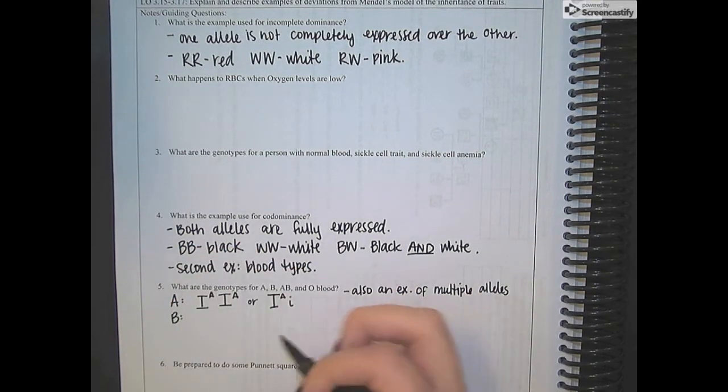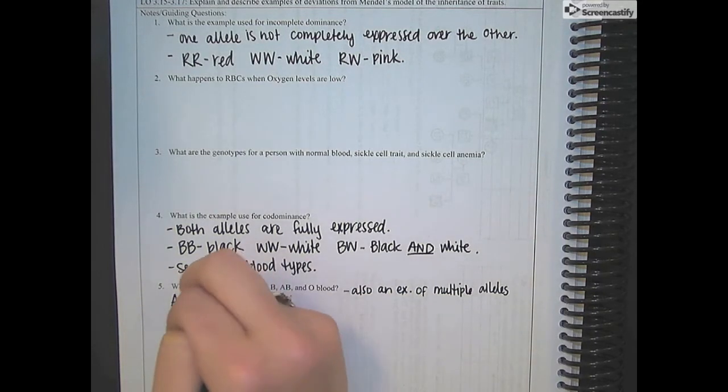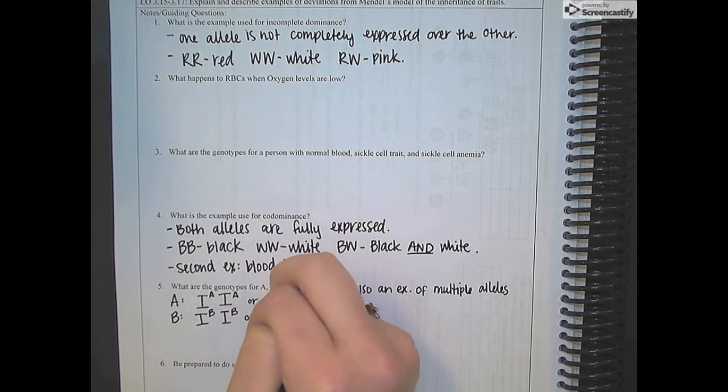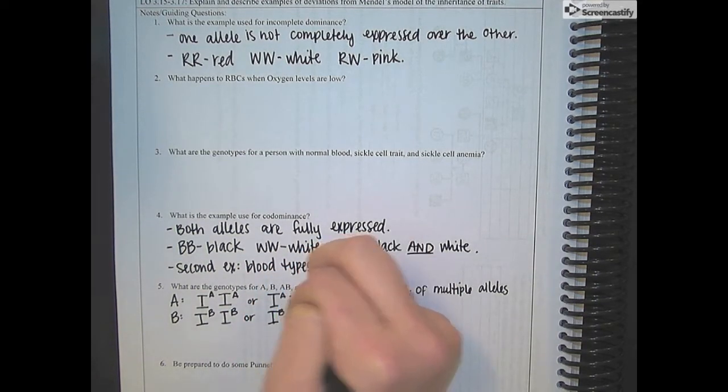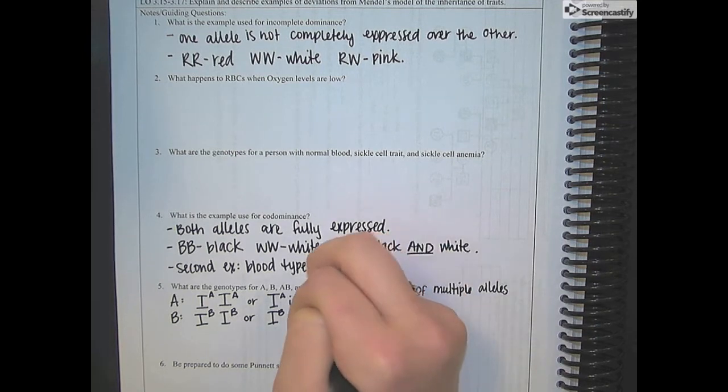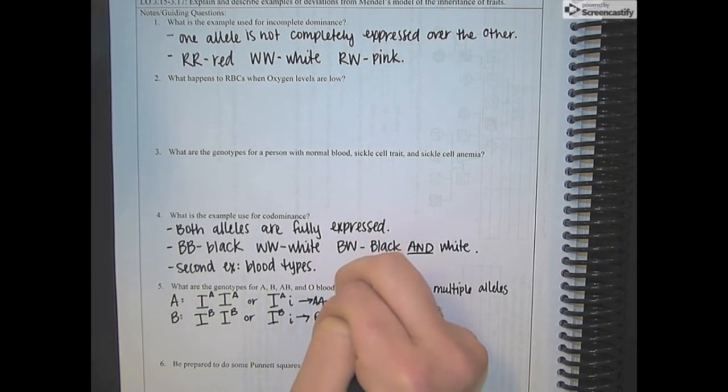So B blood type is going to have the B antigen on the surface. So it could have IB, IB, or IB little i. So this is going to have A antigens. This one is going to have B antigens.